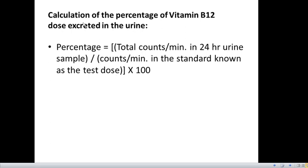Coming to the calculation of the percentage of vitamin B12 dose excreted in urine: percentage = (total counts per minute in 24-hour urine sample) divided by (counts per minute in the standard known as the test dose), multiplied by 100. That is how we calculate it.